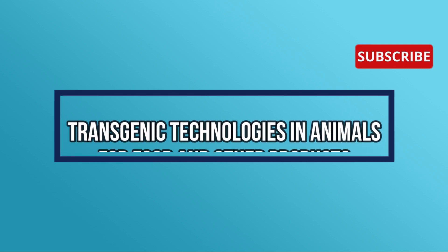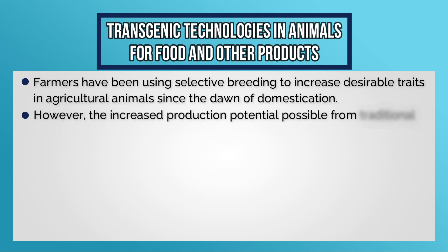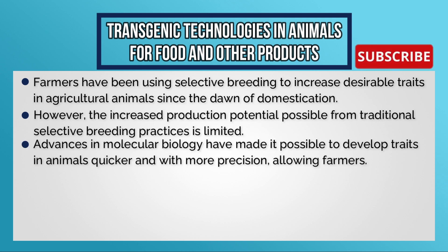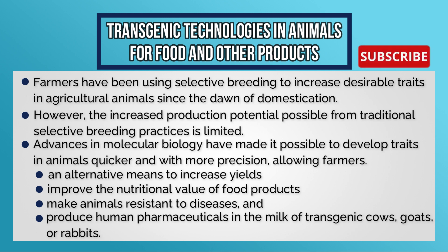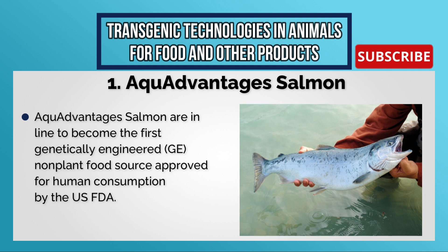Farmers have been using selective breeding to increase desirable traits in agricultural animals since the dawn of domestication. However, the production potential from traditional selective breeding is limited. Advances in molecular biology have made it possible to develop traits in animals more quickly and with more precision, allowing farmers an alternative means to increase yield, improve the nutritional value of food products, make animals resistant to diseases, and produce human pharmaceuticals in the milk of transgenic cows, goats, or rabbits.